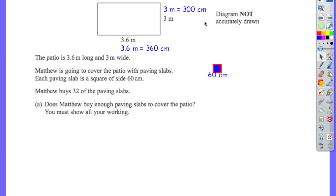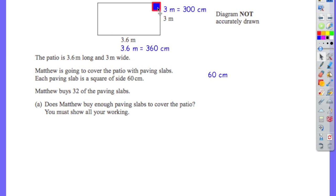Now 60 fits into 300 centimetres 5 times, because 5 times 60 is 300 centimetres. So you can fit 1, 2, 3, 4, 5 slabs along the width of the patio. That means you can fit 6 along the length and 5 along the width, giving you 6 rows of 5.